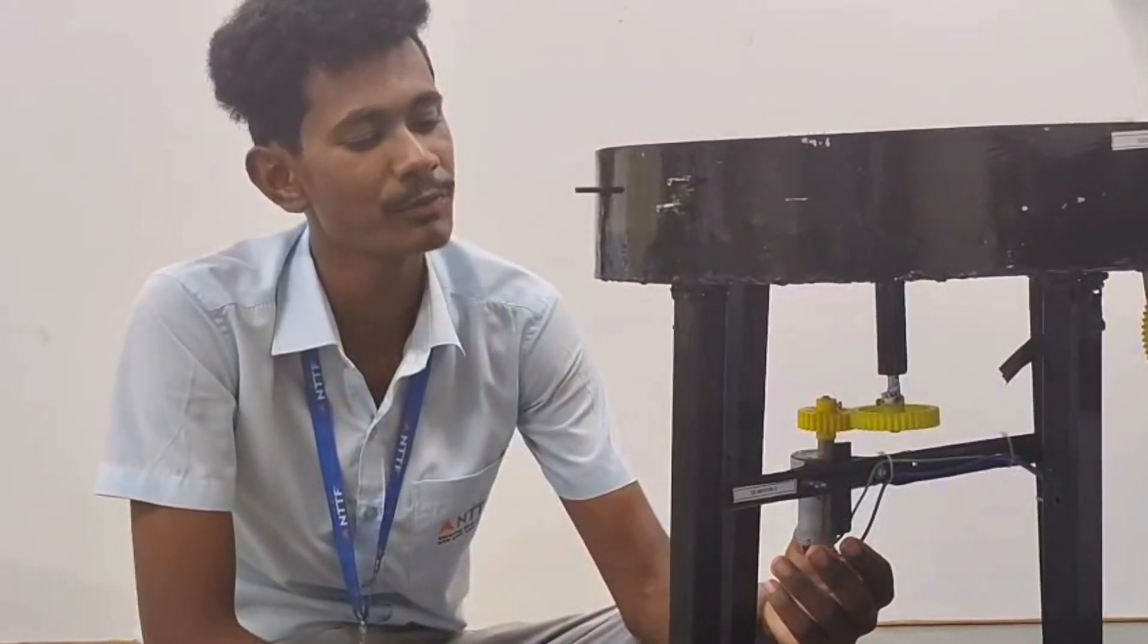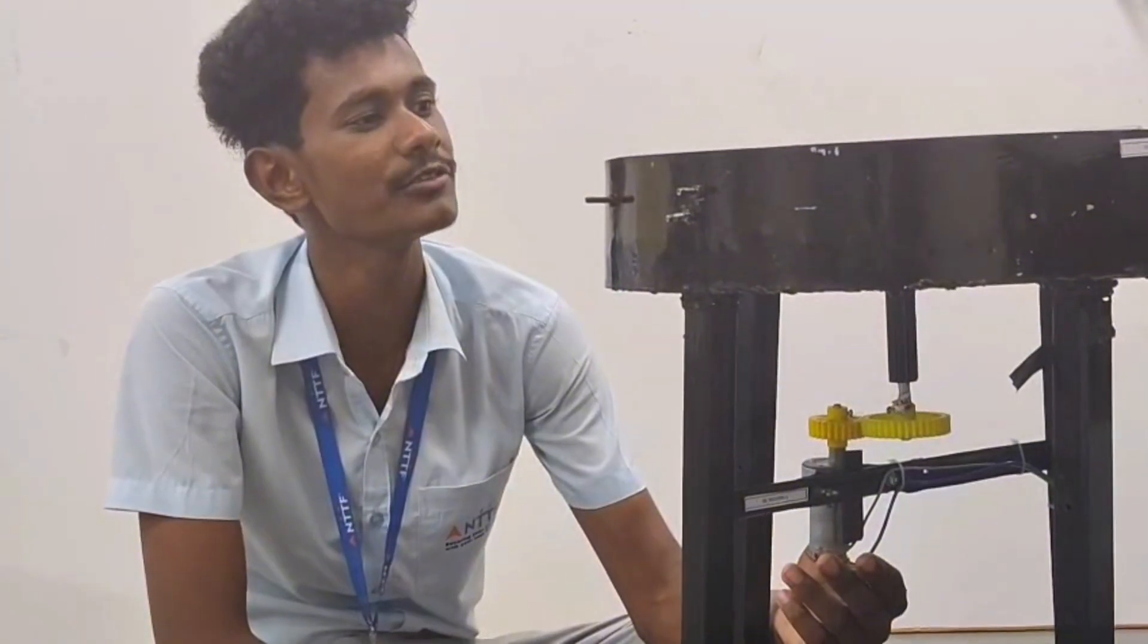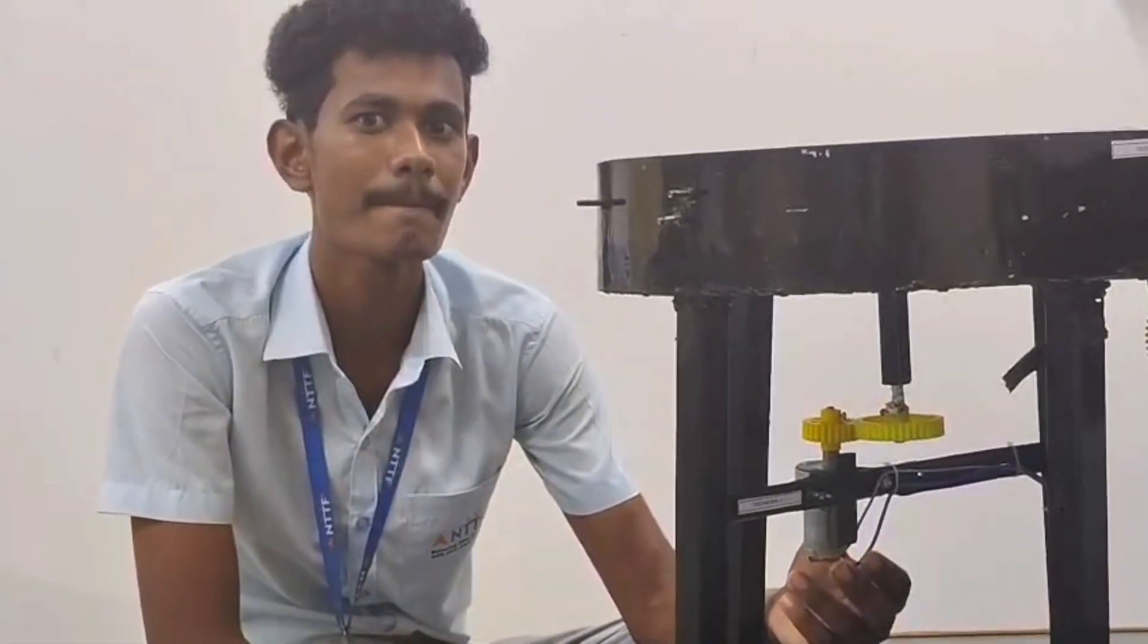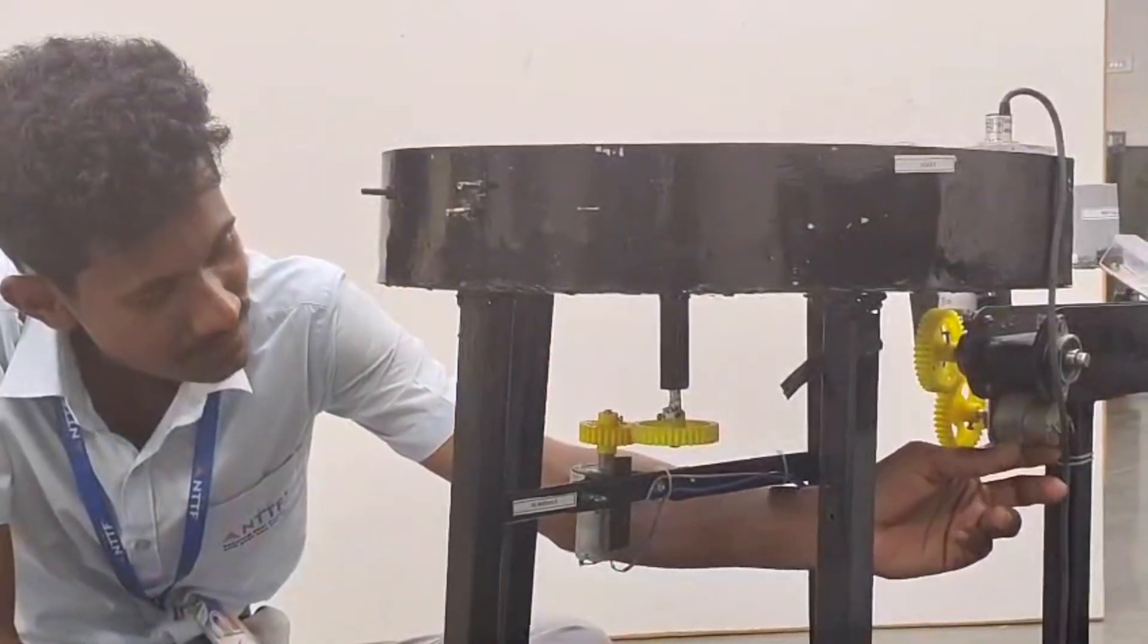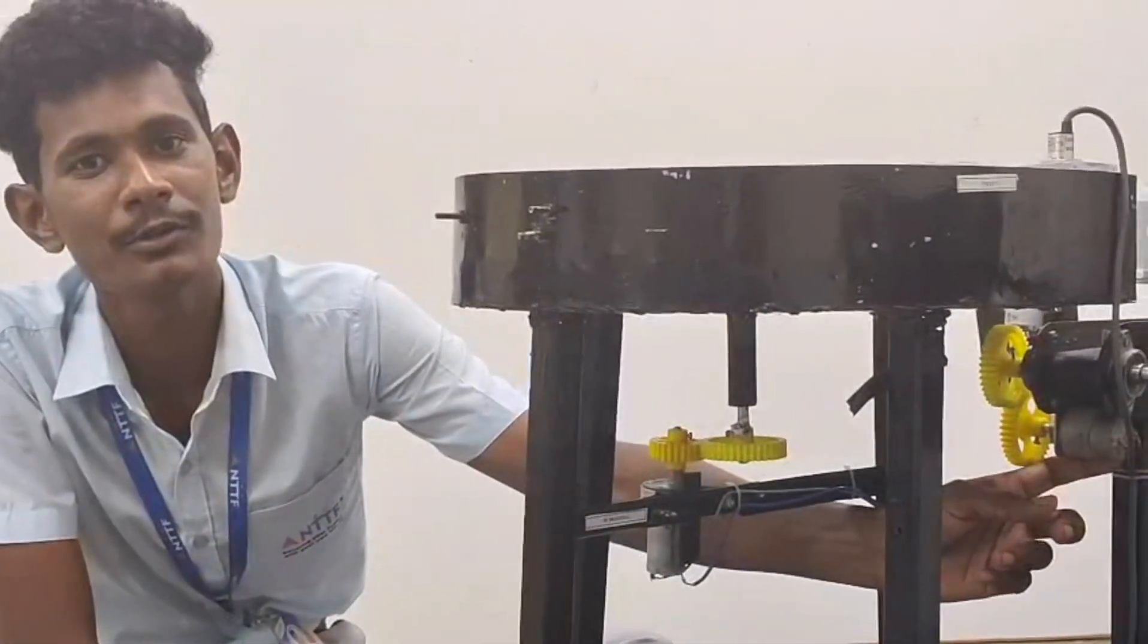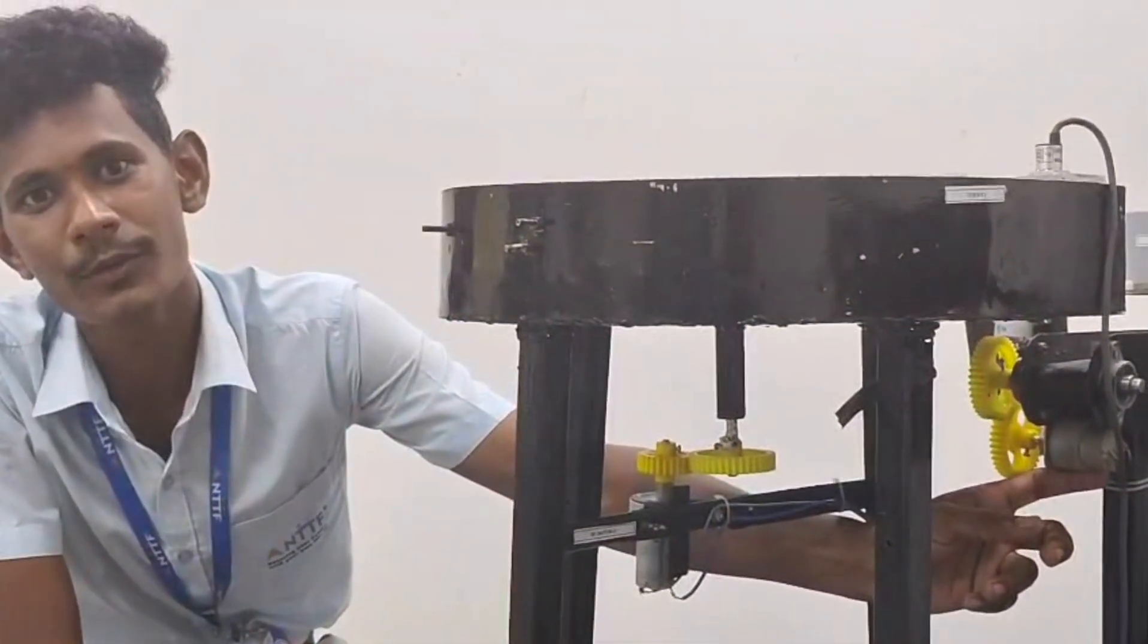This is a 60 RPM DC gear motor. It is used to rotate the feeder, and the operating voltage is 12V 1A. This is a 30 RPM DC gear motor. It is used to rotate the conveyor, and the operating voltage is 12V 1A.